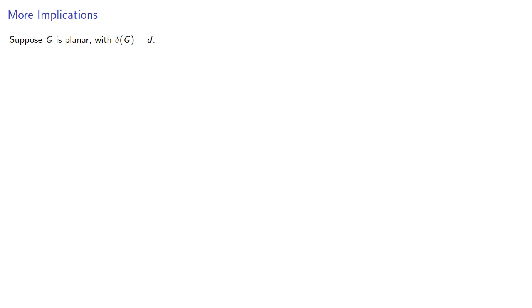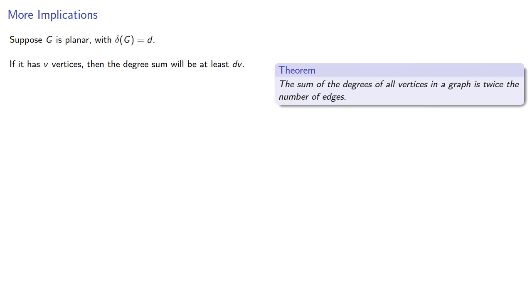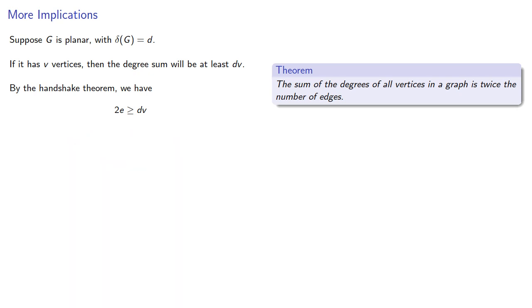Let's think about that. Suppose g is planar with minimum degree equal to d. If it has v vertices, then the degree sum will be at least d times v. The handshake theorem tells us the sum of the degrees of all vertices in a graph is twice the number of edges. So by the handshake theorem, 2e must be greater than or equal to dv. Consequently, there are greater than or equal to dv over 2 edges.